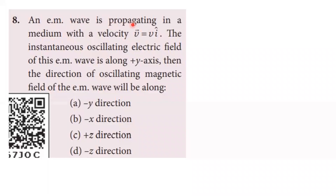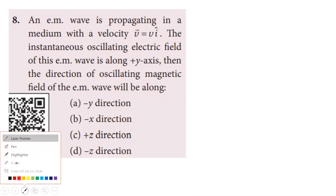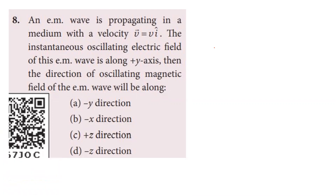Eighth question: an electromagnetic wave propagates with velocity v = v₀ î. The oscillating electric field is along the positive y-axis. Find the direction of the oscillating magnetic field. The direction of velocity equals E cross B. Velocity is î, electric field is ĵ. Since ĵ cross k̂ = î, the magnetic field must be in the k̂ direction, which is the positive z-direction. The third option is correct.